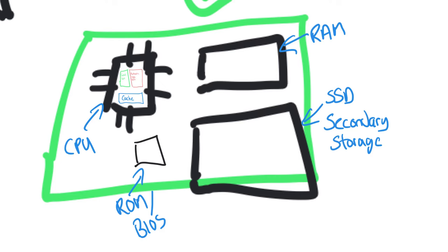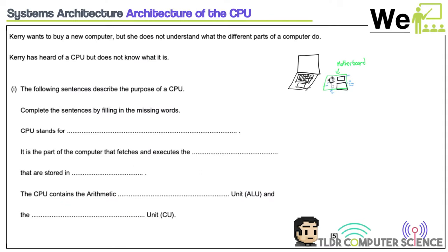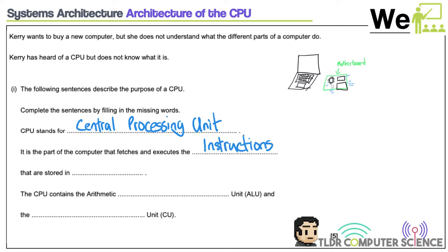So that is your overview of how all this works. Let's come back to our question. CPU stands for central processing unit. It is the part of the computer that fetches and executes the instructions — these are all the small commands the computer needs to do. Instructions are stored in memory — whether that's cache, RAM, or secondary storage, they all come under the description of memory.